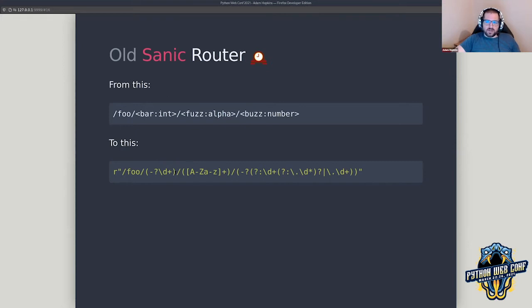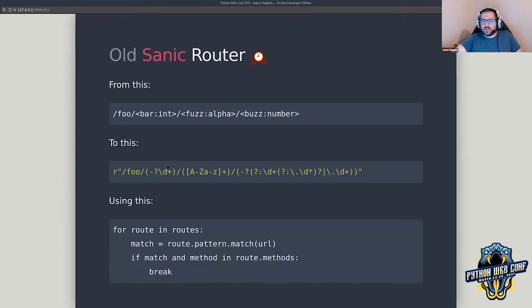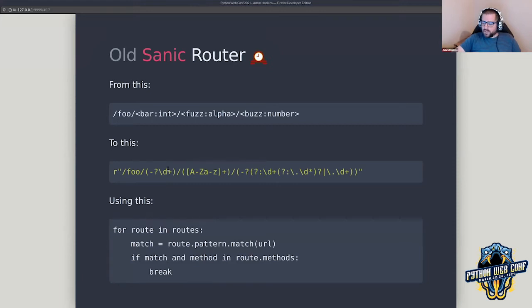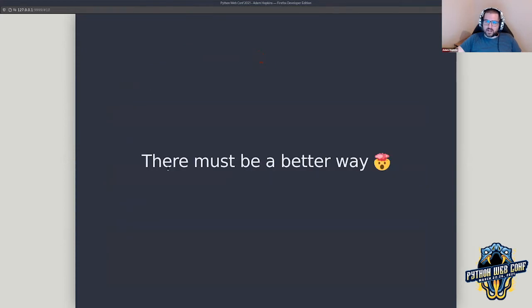When we need to try to make a match, we just run a loop. Obviously this is not the most efficient approach — what if you've got a hundred or a thousand endpoints and you're trying to match number 999? You have to go through a whole bunch of endpoints before you get to the one you want. There's got to be a better way.